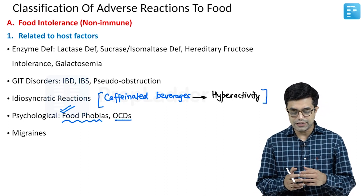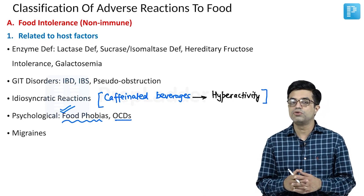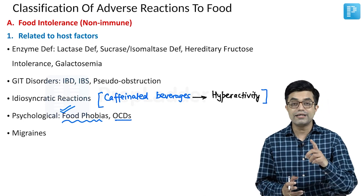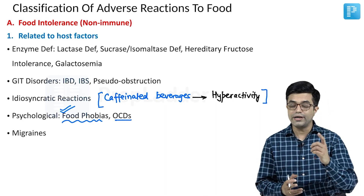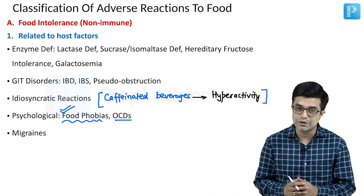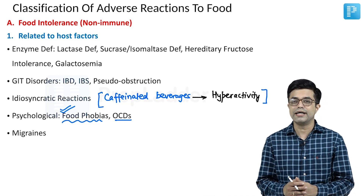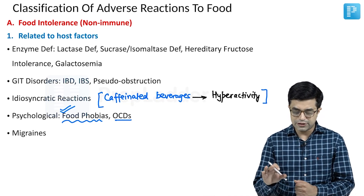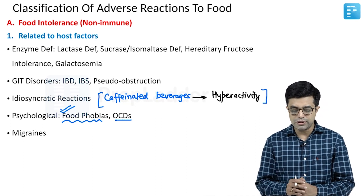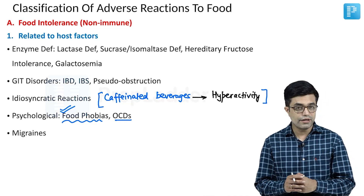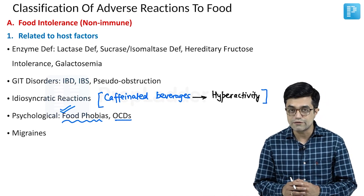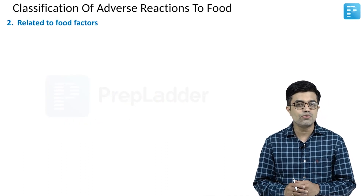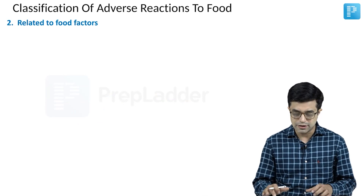Then we have migraines, which can also cause food intolerance in certain patients. Migraine with aura has a higher incidence of developing food intolerance than migraine without aura. This concludes the first category of host-factor-related food intolerance. The second category is those related to food factors.